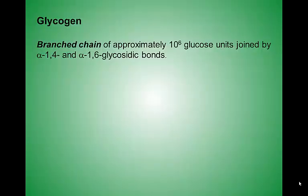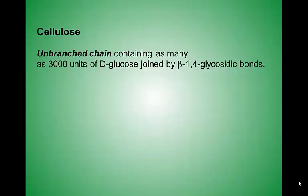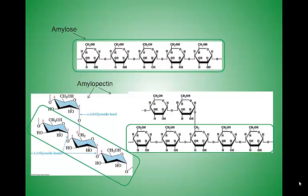Next, we'll look at glycogen. Glycogen looks similar to amylopectin. And finally, cellulose. Cellulose, unlike the other two polysaccharides, is held together by beta glycosidic bonds. The structure of amylose is included below the structure of cellulose to compare the beta to the alpha glycosidic bond. Here are some additional images that you could study from to identify the glycosidic bonds in these large polysaccharides.